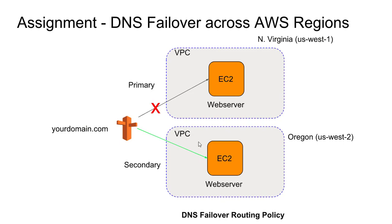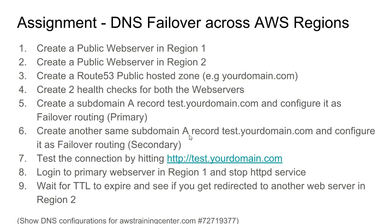We are trying to achieve region-level high availability. As discussed in the last lecture, elastic load balancer works within the VPC — within the same AWS region. Here it is across AWS regions, and that's the difference between high availability across regions versus inside a single region.